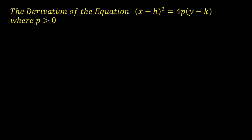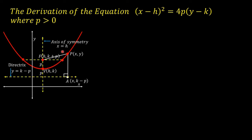We begin with the derivation of the equation (x − h)² = 4p(y − k), where p is greater than zero. Looking at the figure, this is the y-axis and x-axis. This is a parabola opening upward with vertex at point h, k. The vertex is h units away from the y-axis and k units away from the x-axis. This is the directrix, and its equation is y = k − p.